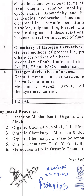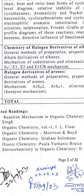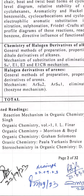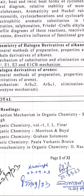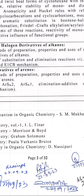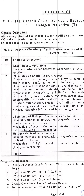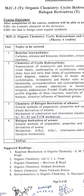There are some reference books for this course — you need to get them from the library: organic chemistry textbooks. We will teach you two units — unit 3 and unit 4 — covering chemistry of halogen derivatives of alkanes and halogen derivatives of arenes.